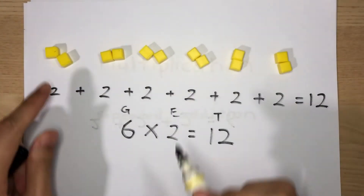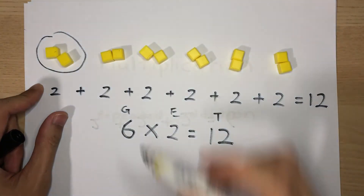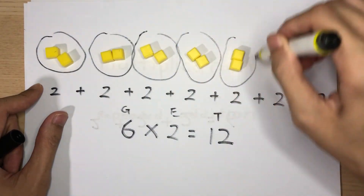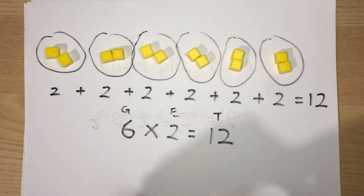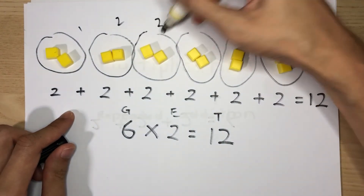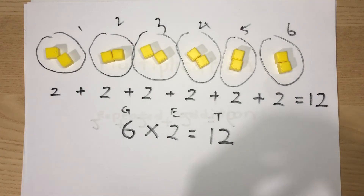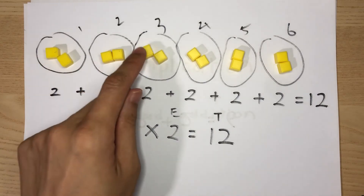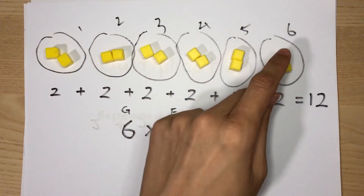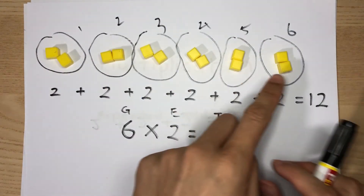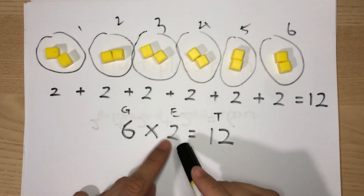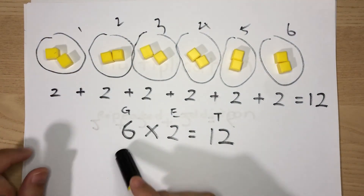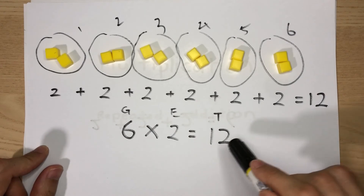Can you see here that this is one group of two? This is another group of two, another group, another group, another group, and another group. There are a total of six groups. There are six groups — how many in each group? Every single group has two cubes inside. That's why there are two. How many groups are there? Six. That's why six is here. Six multiplied by two will give you twelve.